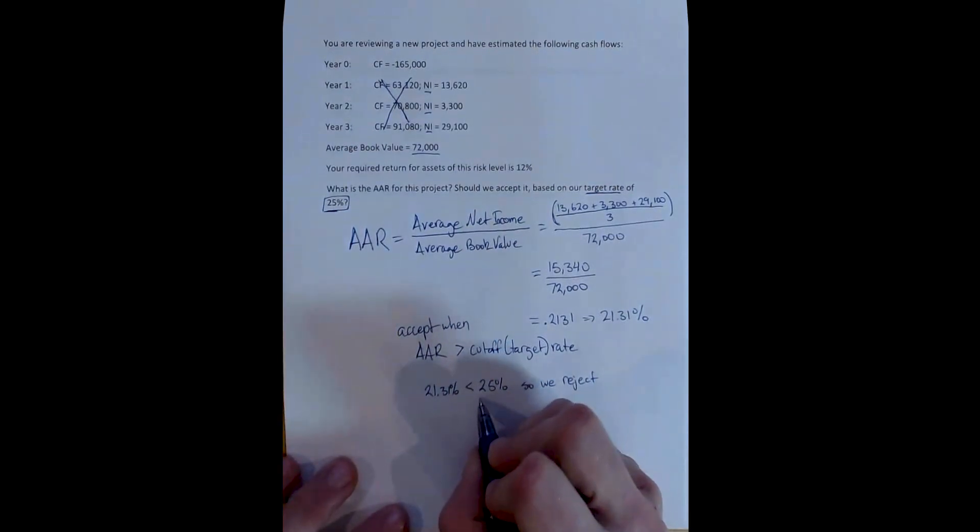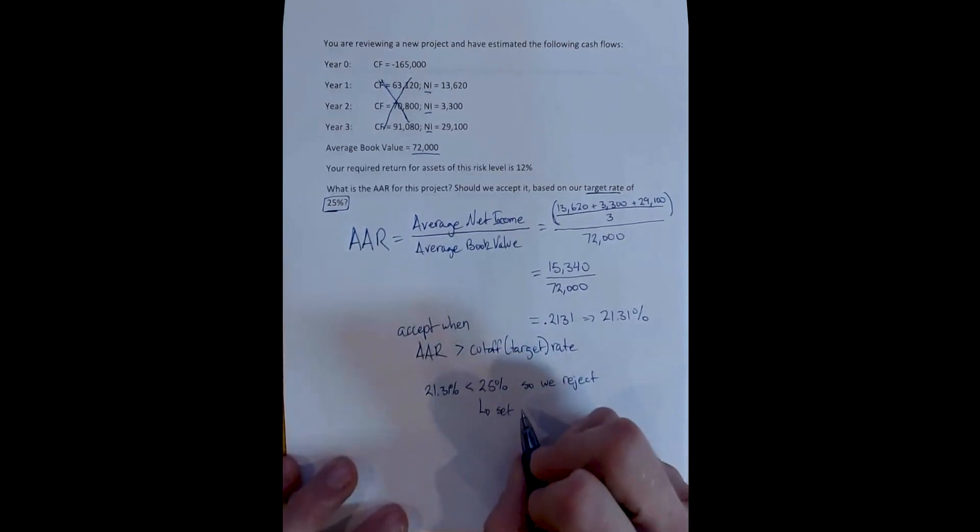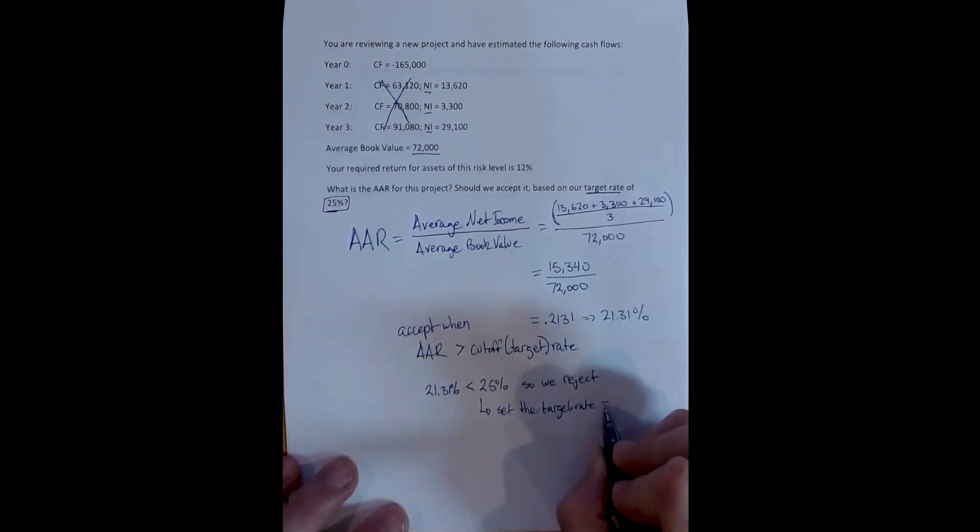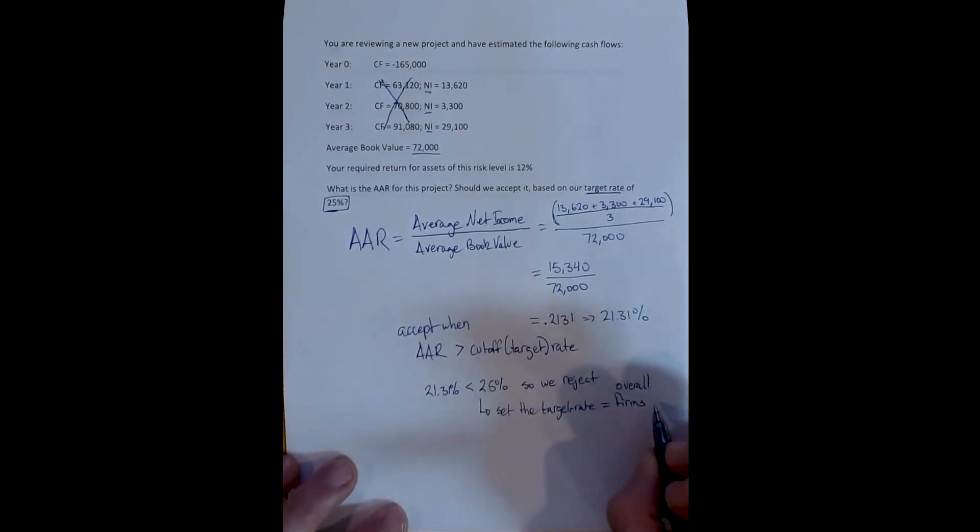We can, and often will see, established firms set the target rate equal to the firm's total return on assets. The overall firm's total return on assets.